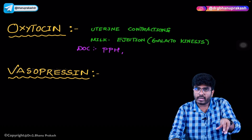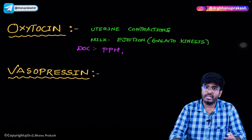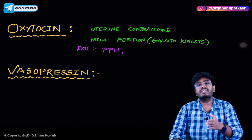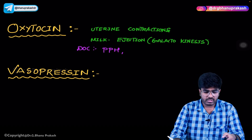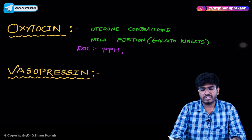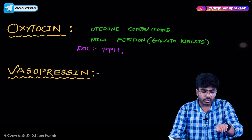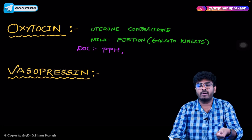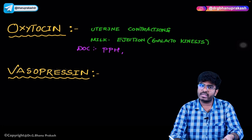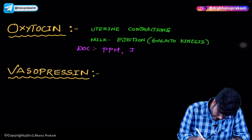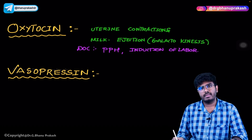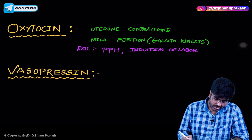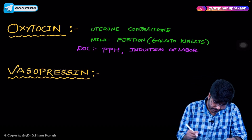Since oxytocin causes uterine contractions, it is also the drug of choice for induction of labor. For example, if a pregnant woman has crossed 42 weeks and uterine contractions have not started, we need to induce labor. The drug of choice for induction of labor is oxytocin.